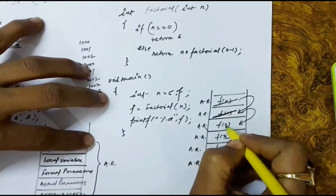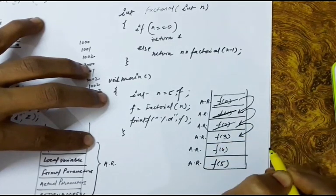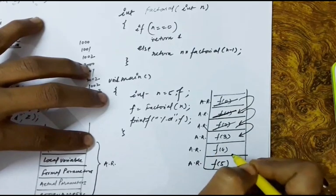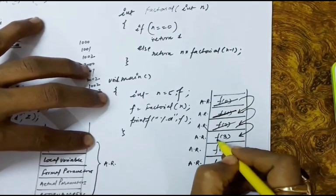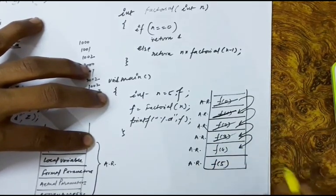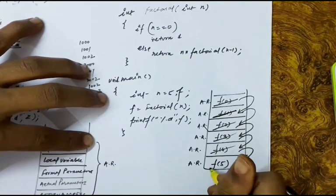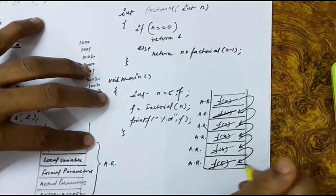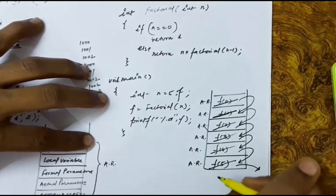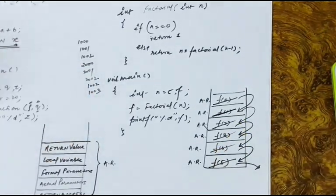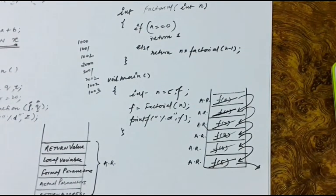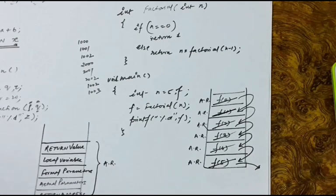Once we know the value of factorial(1), it is resolved, so we pop its activation record and return the value to factorial(2). Similarly, factorial(2)'s activation record is popped and the value is returned to factorial(3). Then factorial(3) becomes active, its record is popped, and the value is sent to factorial(4), which returns to factorial(5). Finally, factorial(5)'s activation record is popped and control returns to main. We are pushing activation records onto the stack and popping them as each function resolves, which tells us where to return the value. For every function call, an activation record is maintained in a stack.